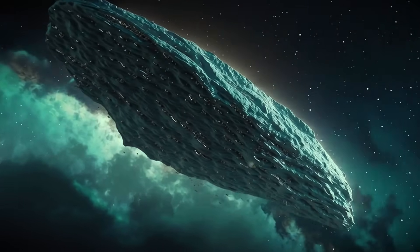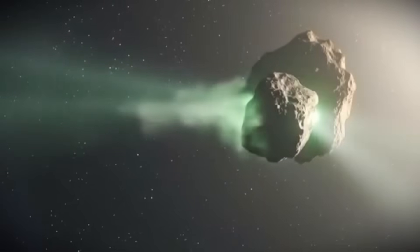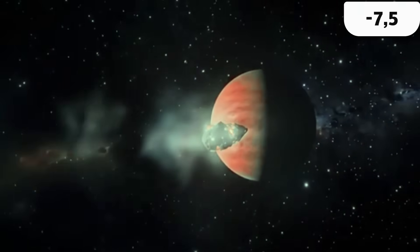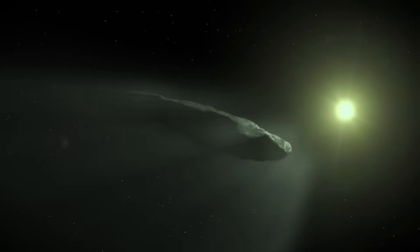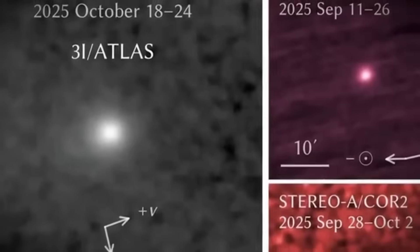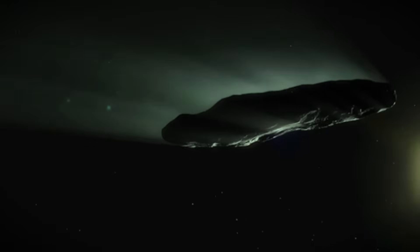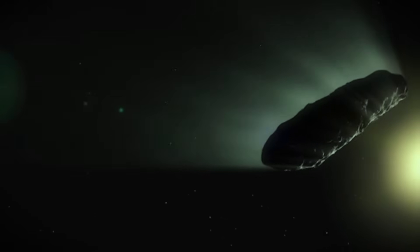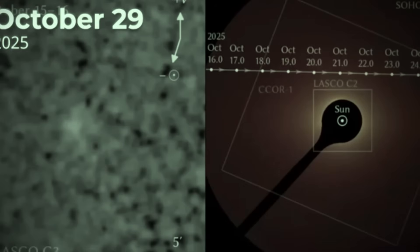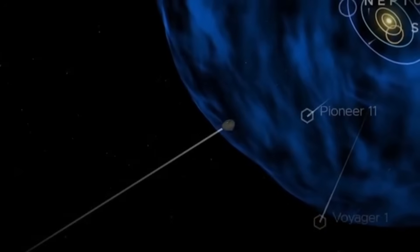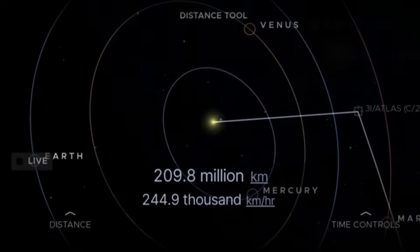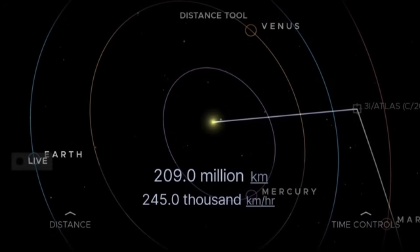So what exactly is non-gravitational acceleration? Think of it this way: when you throw a ball, gravity pulls it down in a predictable path. But if that ball suddenly had small rockets firing on it, it would go off course. That's what's happening here. Atlas isn't following the path that only the sun's gravity would create. Something else is pushing it. For a comet, the natural explanation is outgassing. When ice heats up near the sun, it turns into gas and fires like a rocket engine. This is totally normal for comets. The problem is the amount of gas that would need to be coming out of Atlas to create this acceleration.